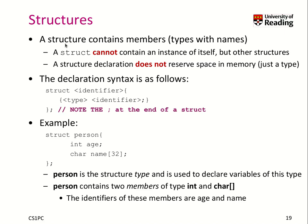Next we talk about structures. A structure contains members, which are types with names. Here's an example: we have the identifier age, which is of type integer, and we have name, which is an array of 32 characters as a second member. These two are members of the structure person. This is now a new type, and we declare this type, which means it does not reserve any space in memory — it's just a type specified for us.